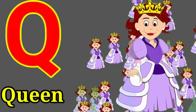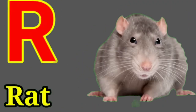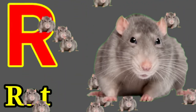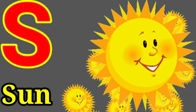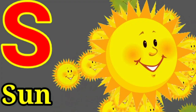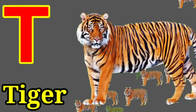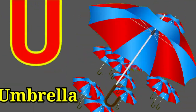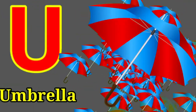Q for queen, R for rat, S for sun, T for tiger, U for umbrella.